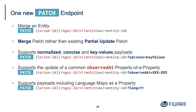There is one new PATCH endpoint: merge patch, rather than the existing partial update patch. The merge patch supports normalised, concise, and key values. This new concise version is available as an input on all endpoints, but particularly for merge patch it is possible to put a key-values payload. It supports the update of a common observedAt — if you want to do a merge patch and say all of the information I'm pushing was at this particular timestamp, you can put observedAt and an ISO date as a parameter.